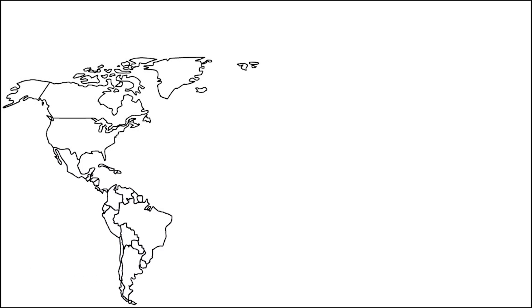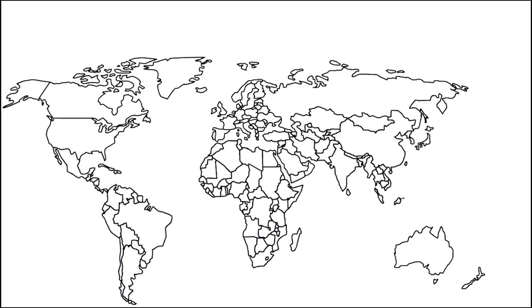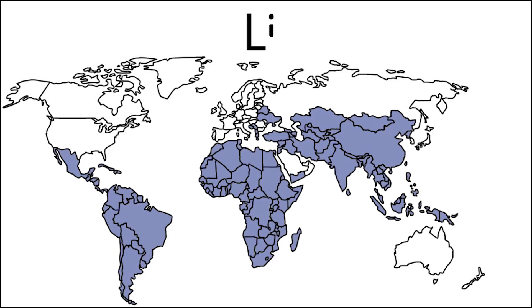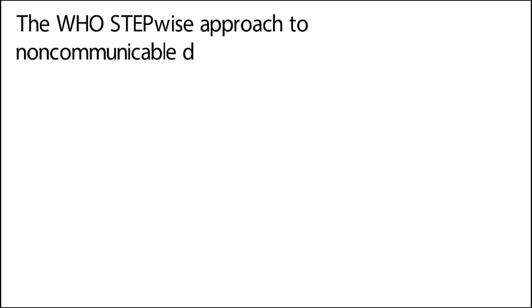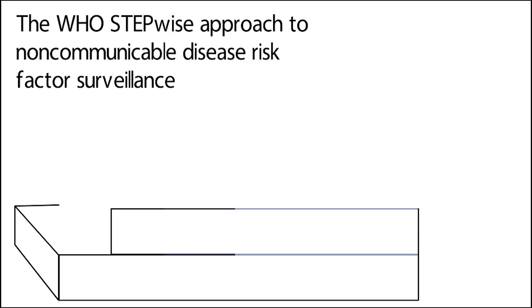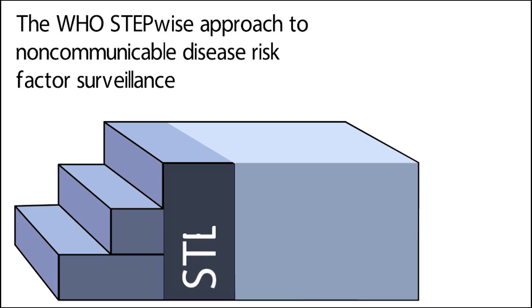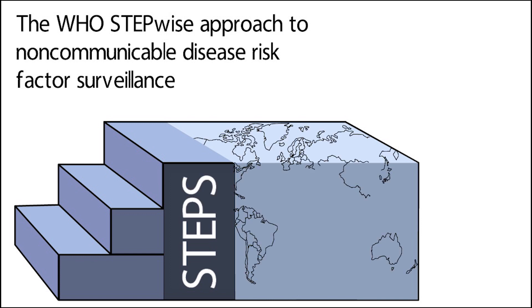Low- and middle-income countries sometimes find it a challenge to conduct surveillance for chronic diseases because of a lack of resourcing or technical ability and expertise. To assist these countries, the WHO has developed what is called the Stepwise Approach to Surveillance, or STEPS for short. STEPS provides an entry point for low- and middle-income countries to get started on chronic disease surveillance and to develop evidence on which to base response actions.